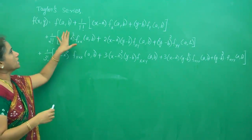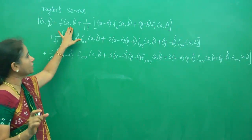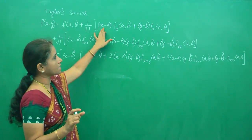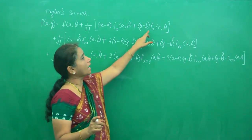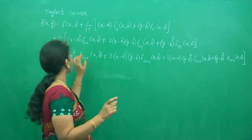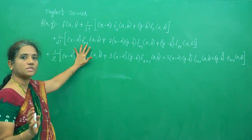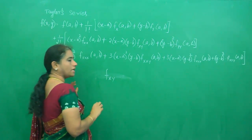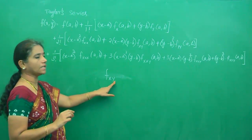Now, the formula goes like this. f(a,b) — a and b are the values at which we want to approximate the function. And x minus a, where a is a point and x will stay as it is. f_x means first partial derivative — first order derivative with respect to x. And f_y means partial derivative of the given function with respect to y. f_xx means you must do the double derivative with respect to x partially.